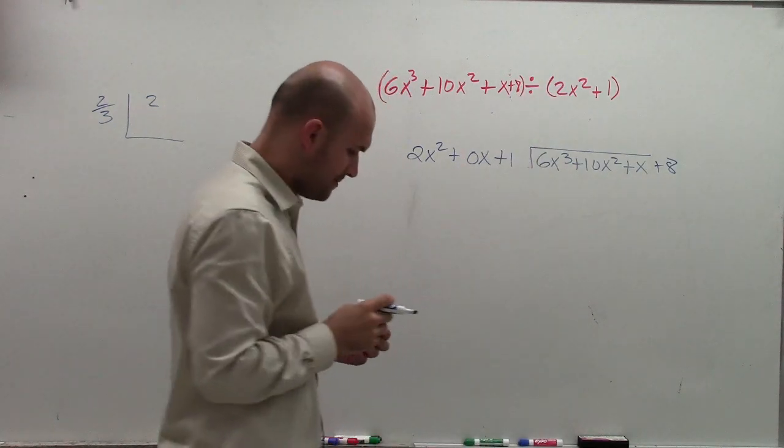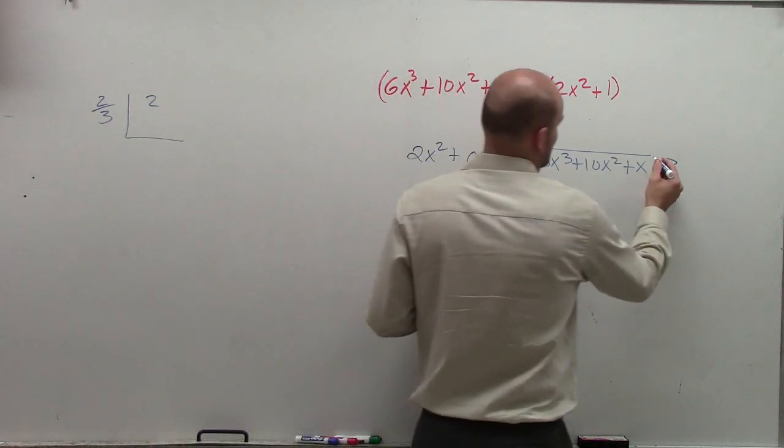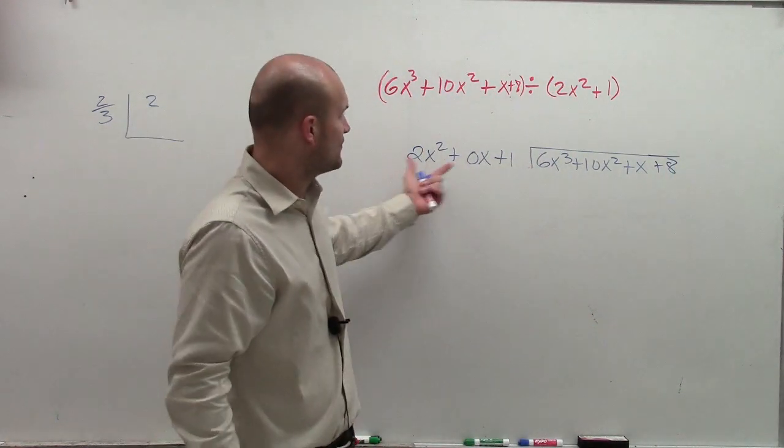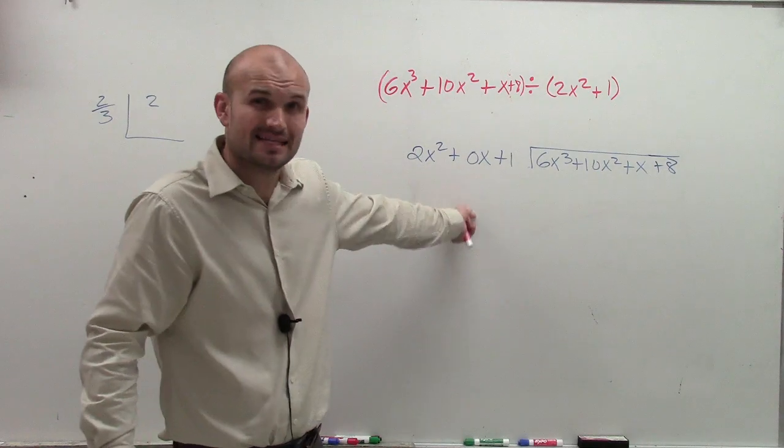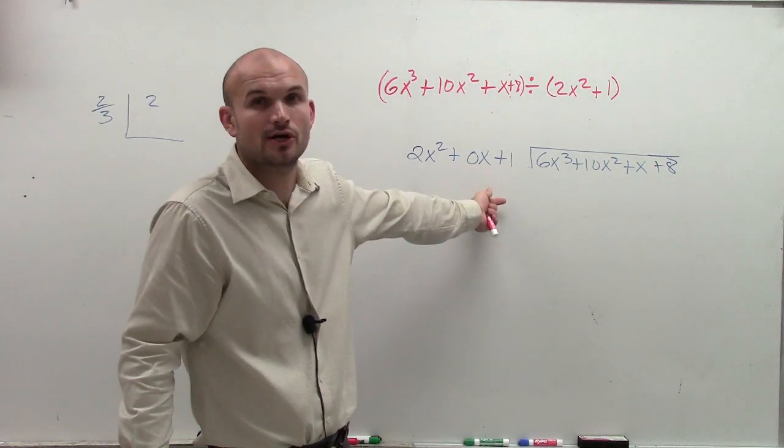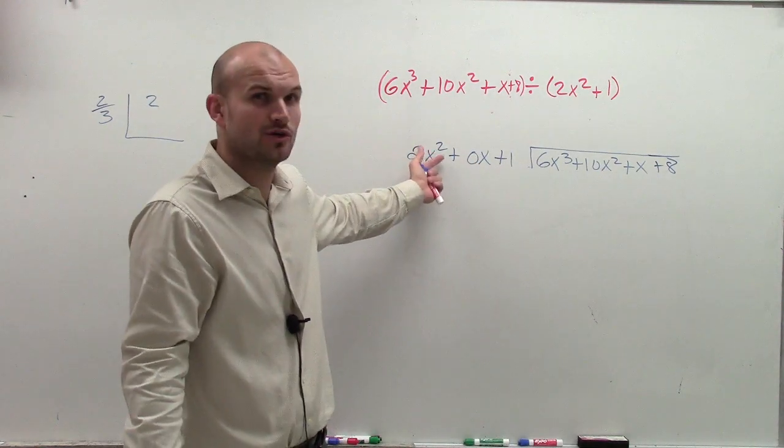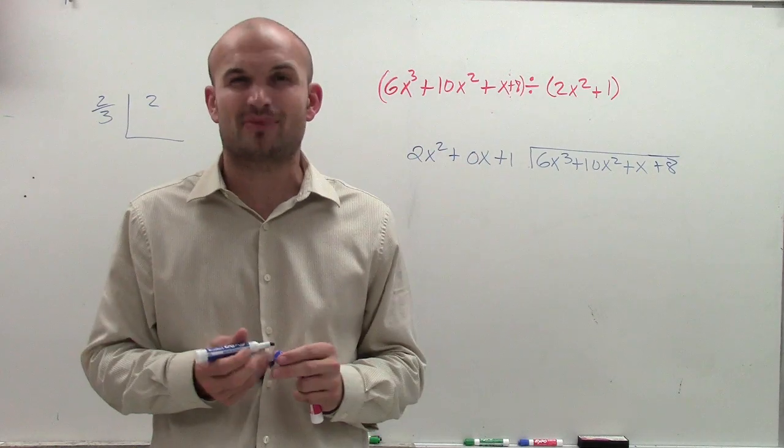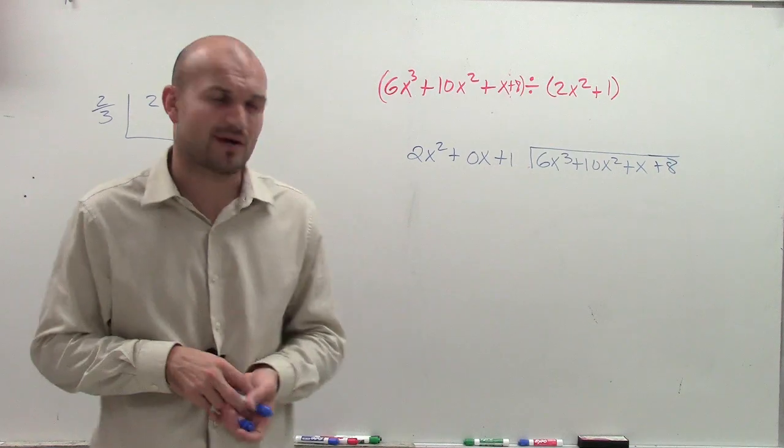OK. So what I'm going to do is when doing a problem like this, I want to make sure that we need to understand when we're dividing, we're going to use placeholders. If I don't have a linear term and I have a high degree of 2, I need to make sure all my degrees are in there so I'm not losing any placeholders when I'm doing my division problem. And you'll see.